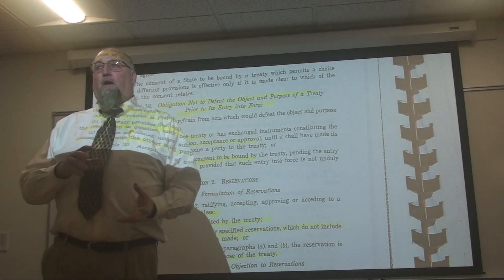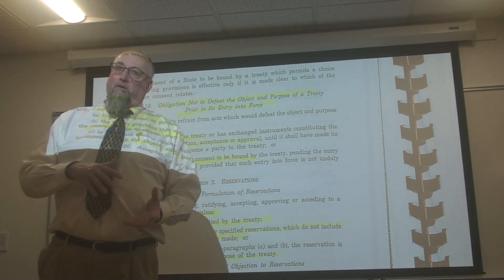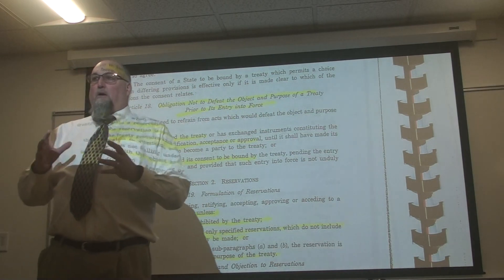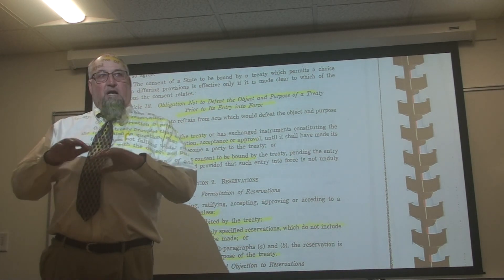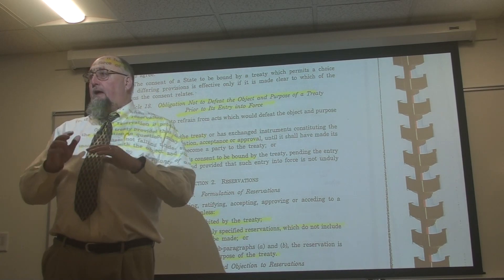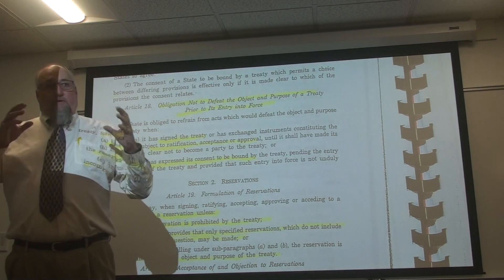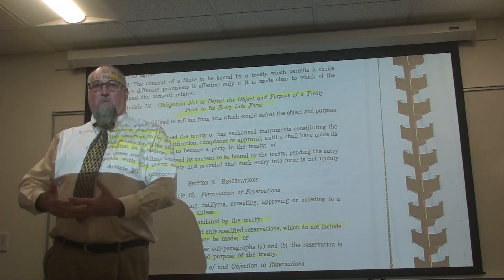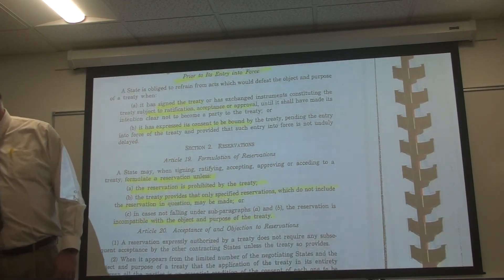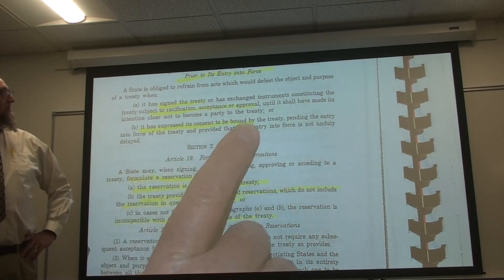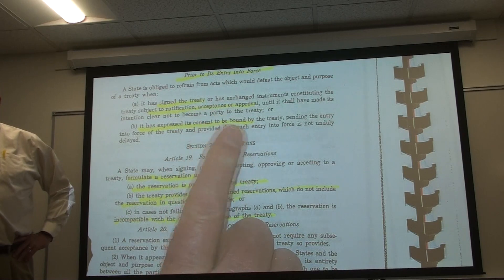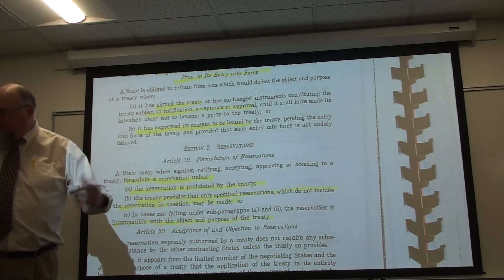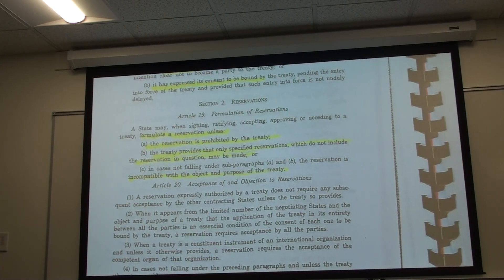This raises an interesting theme woven throughout the Vienna Convention: is treaty law really the highest form of law, or is it customary law? In some cases, treaty law is actually secondary to customary law and to the notion of good faith. For example, maritime law has never been fully ratified by the US, but we still carry out many of its provisions.